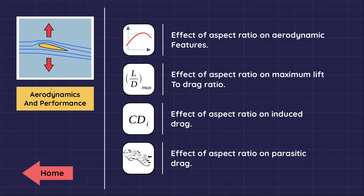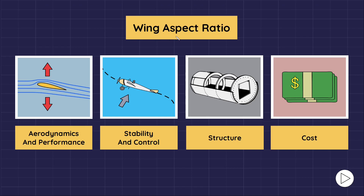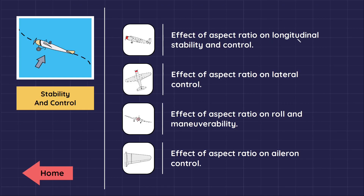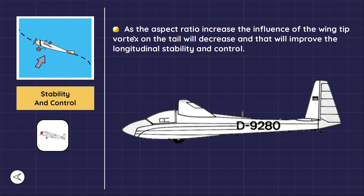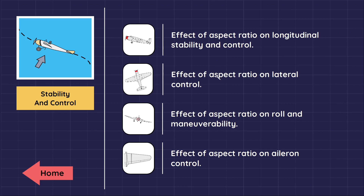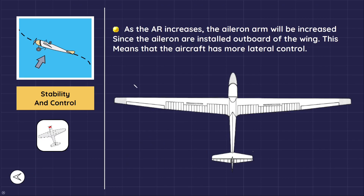We have finished the effect of aspect ratio on aerodynamics and performance. Now let's look at the effect of aspect ratio on stability and control. As the aspect ratio increases, the influence of the wing tip vortex on the tail decreases, which improves longitudinal stability and control. Regarding lateral control, as the aspect ratio increases, the aileron moment arm increases since the ailerons are installed outboard of the wing, giving the aircraft more lateral control.